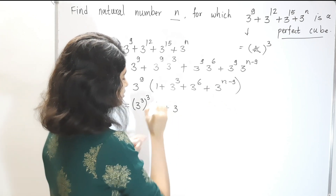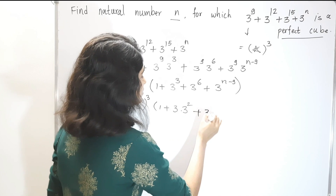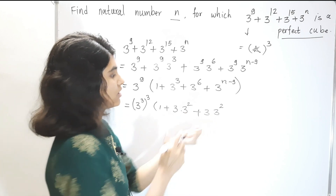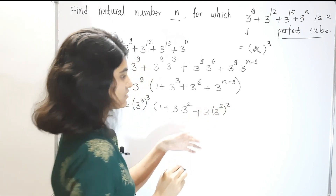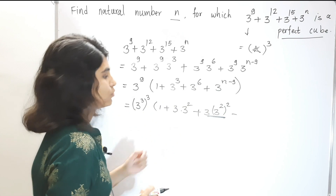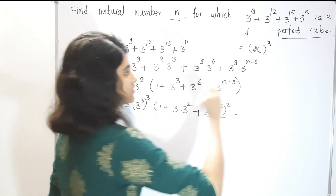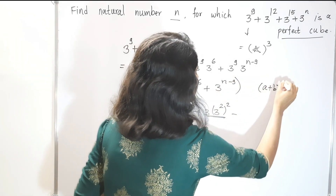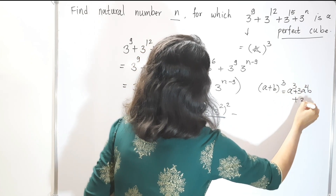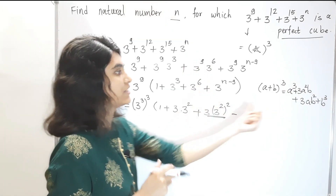To do that, let me see the pattern. We can write 1 + 3·3^2 ... and let us recall the formula: (a + b)^3 = a^3 + 3a^2·b + 3a·b^2 + b^3. We are trying to write the bracket in this form.